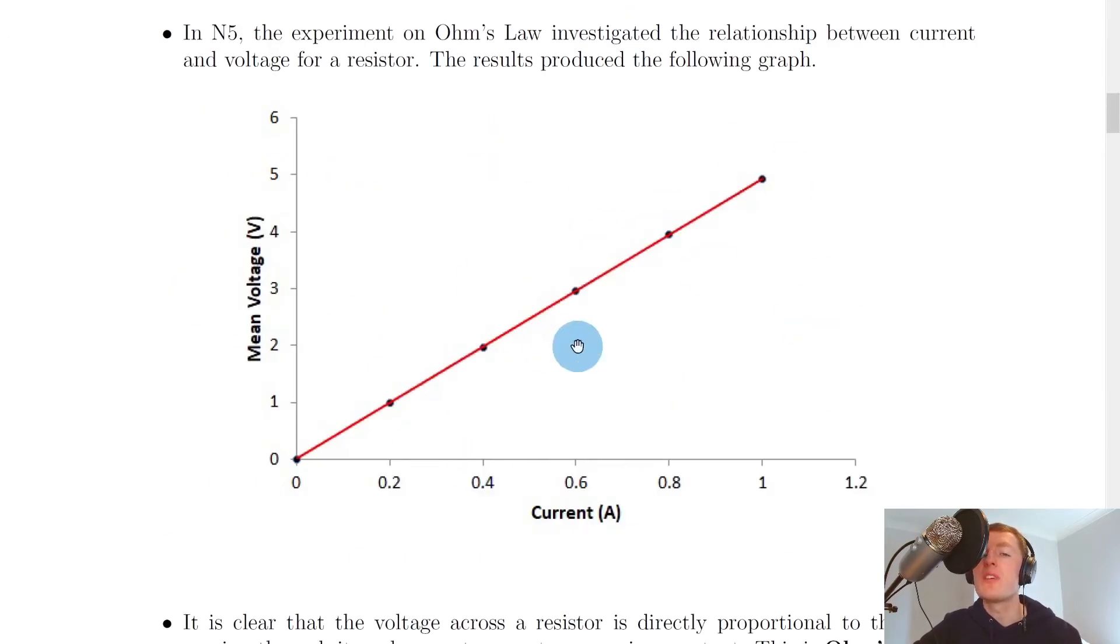The gradient of the line on the above graph gives resistance. If I look back at this graph here, if we were to choose two points on this line and calculate the gradient using the change in Y over the change in X, I would actually find the resistance value of the resistor that was used in this experiment. The gradient of this straight line of voltage against current gives us resistance.